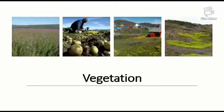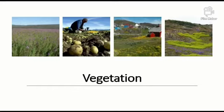Greenland is mainly ice covered so nothing grows in that area. There is no forest and no crop can be grown, but in summer some plants grow like shrubs, mosses, lichens, and grasses. Some flowering plants grow in the summer months.